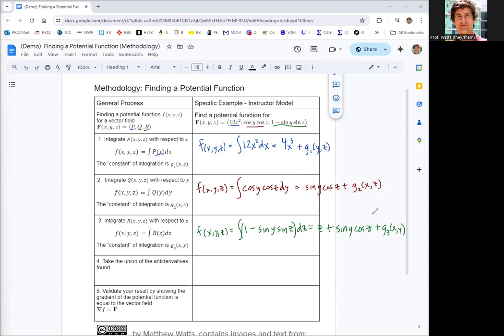So the potential function should be the union of these antiderivatives. And so that means if you see a term appear in more than one of these, it's the same term, and you just include it once. And anything that appears in these lists gets combined. So we can now list all the things. So from the step one, we know that there's a 4x cubed. From steps two and three, we know that there's a sine y cosine z. Since that term depended on both y and z, it's going to appear in both the y and z integrations. And then from the step three, we know that there's a plus z.